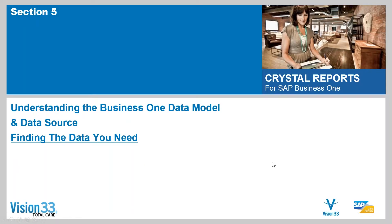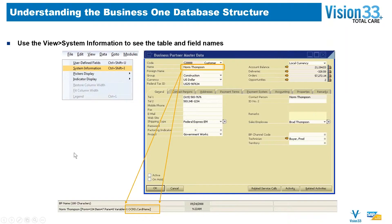You can have the greatest reporting skills in the world, but if you don't know how to find the data and where it's at in Business One, you're at a loss. Most people are unaware that there are probably about 1,700 tables with an average of 100 fields per table in the Business One database. So it's quite large and very detailed, and you need to have some understanding about it and what tools in Business One will help you find what you're looking for.